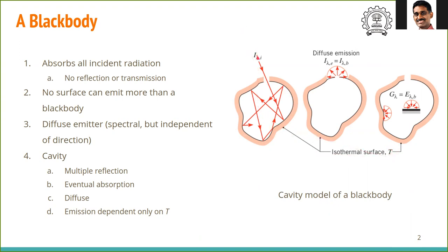Anything incident through the hole enters this blackbody. Even if the surface is non-ideal and has reflection, the radiation reflects and bounces around inside. At every interaction, some gets absorbed and some gets reflected, but nothing gets transmitted since these are all opaque surfaces. So it reflects several times, and the reflected portion is actually very small because reflection keeps reducing the intensity.